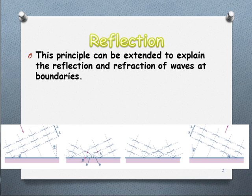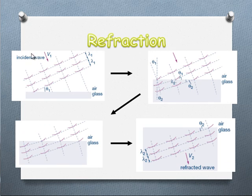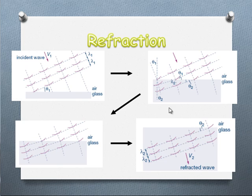Similarly for refraction, we have the incident wave coming in. As it starts to enter the new medium — a more optically dense medium — it causes it to slow down. It continues to slow down as each wavelet enters, and ultimately, because the left-hand side is going slower than the right-hand side, it's travelling further out on one side than the other, and this results in a change of direction. You're not really going to be examined on this, but it's useful background information. Alright, that's it.